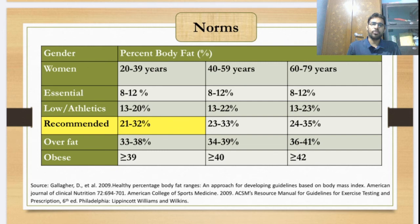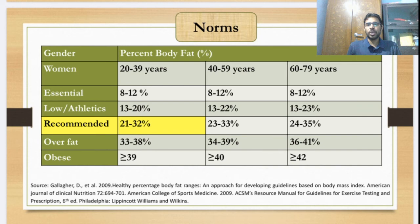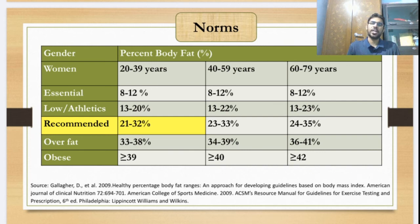As per the norms, if your fat percentage is 8 to 12% it means essential fat. Recommended is between 22 and 32 percent. Over fat means above 32% — either 33 to 38% — and obese is 39% or more.